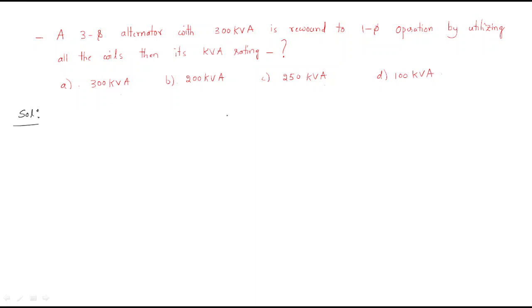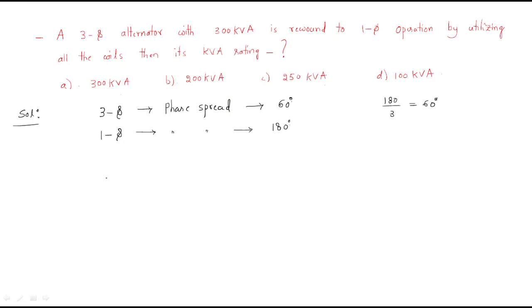For the solution: the given system is a three-phase system with a phase spread of 60 degrees, since 180 divided by 3 equals 60 degrees. It has to be converted to a single-phase system, for which the phase spread becomes 180 degrees. The three-phase system has a KVA value of 300 KVA, and we need to find the KVA if we are using the single-phase system. So we write the relation between the two KVA values.